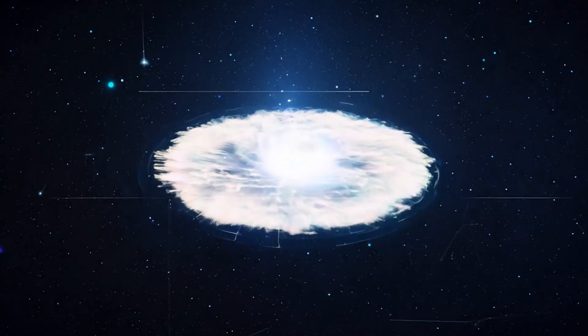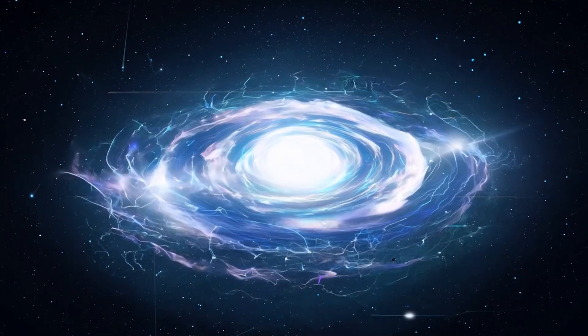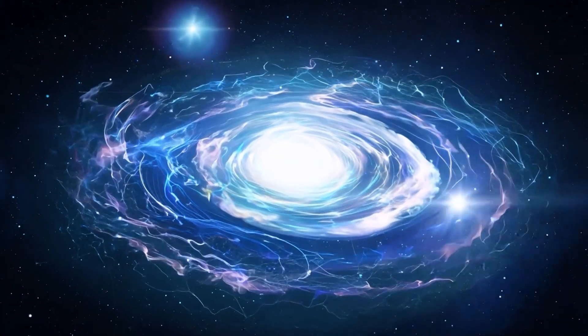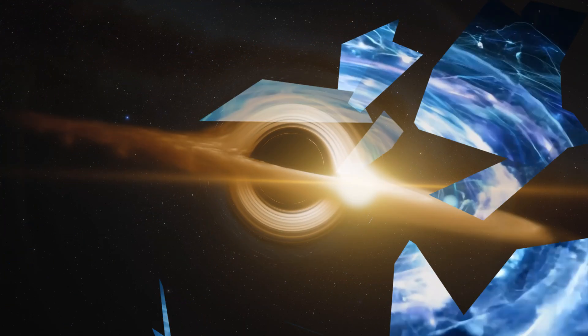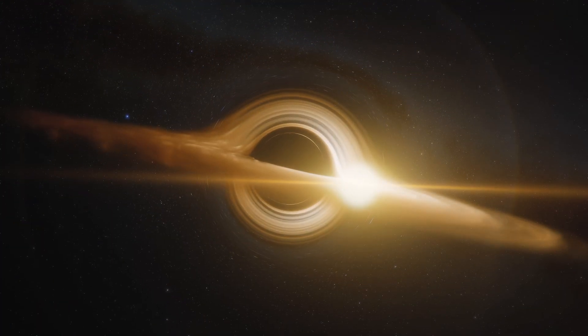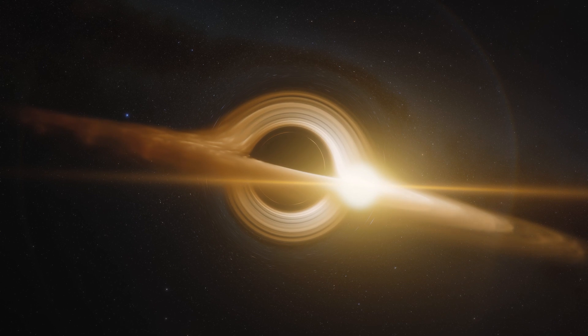If you fell into a stellar black hole, you'd be torn apart before even reaching the event horizon. But what if you fell into a supermassive black hole? Then you might just make it past the event horizon intact. And that's where things get really strange.